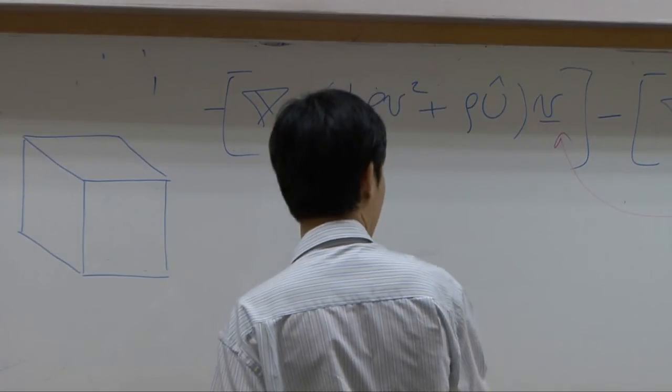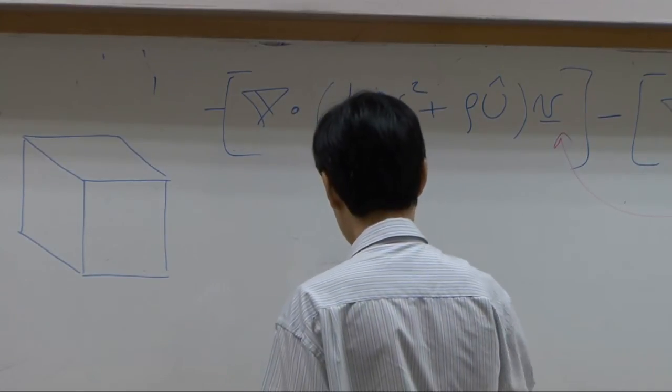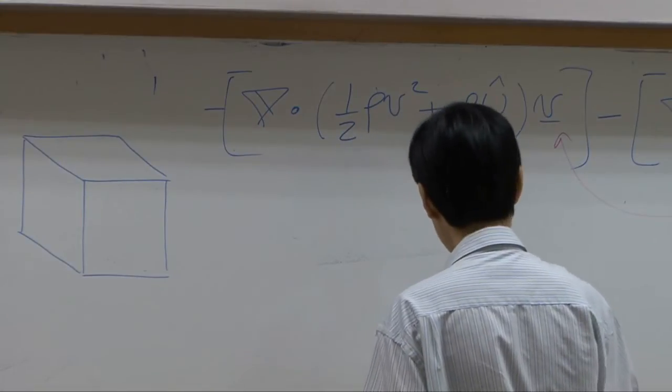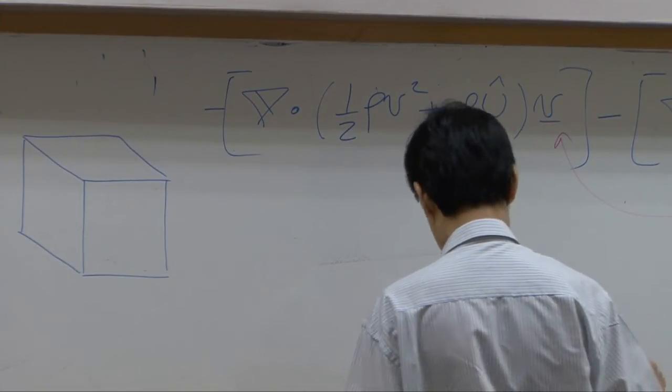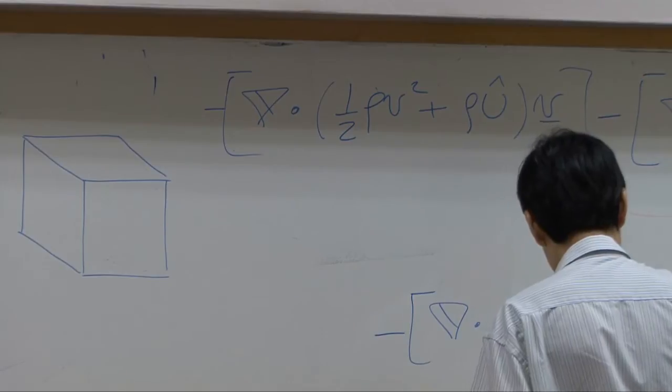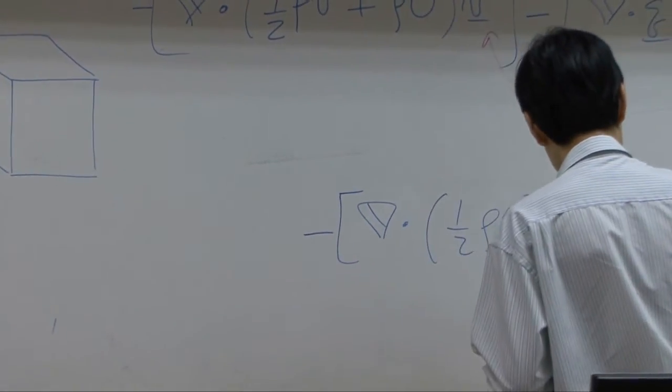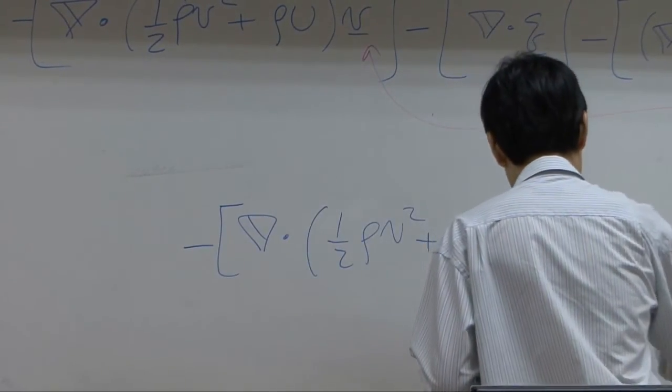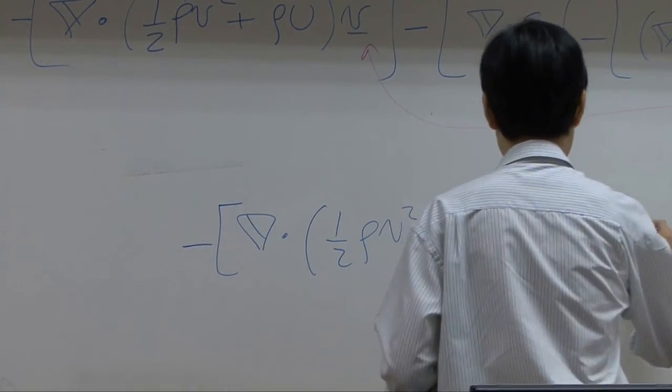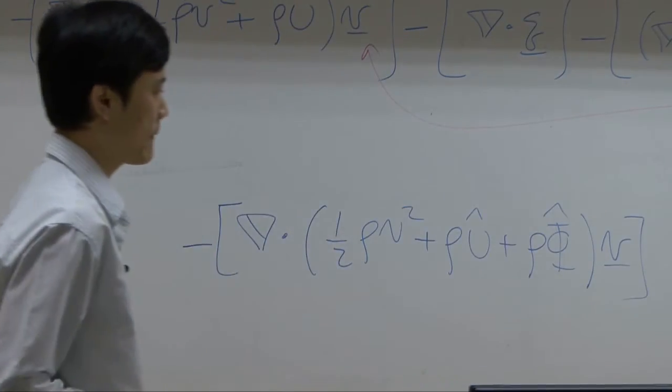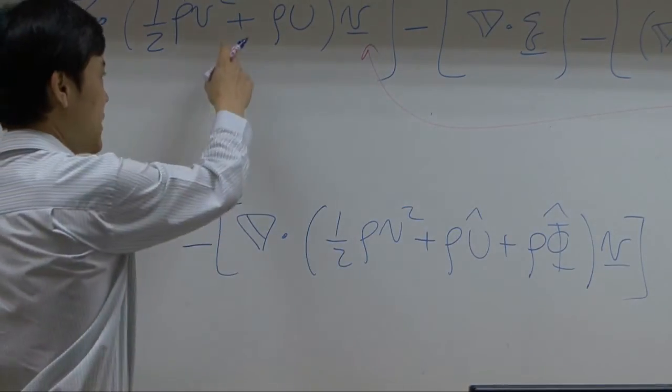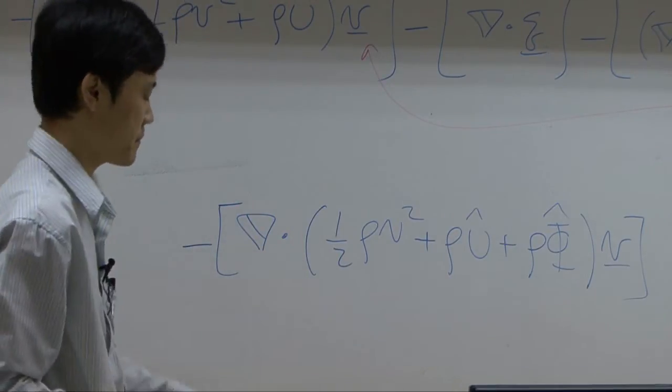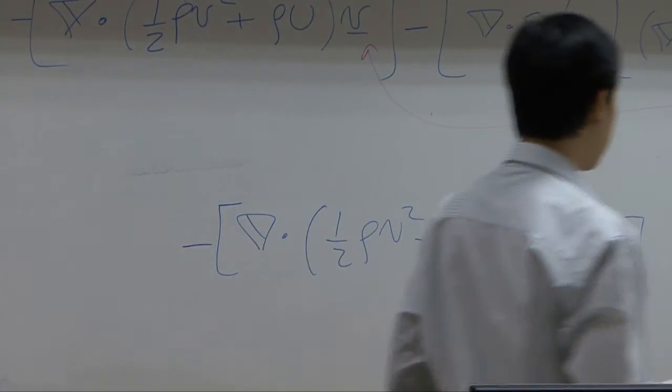So after adding it together, you have del dot 1 over 2 rho v squared plus rho u plus rho times potential energy v. Right? From this term, add that potential energy term, you get this part. The rest would be the same.